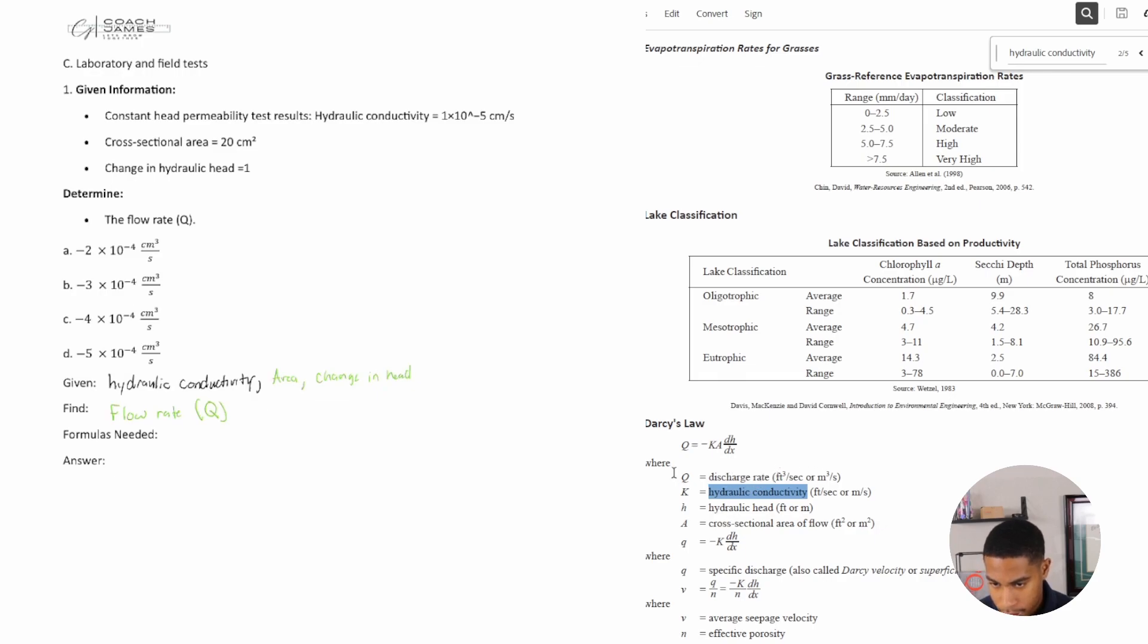And then dH over dX. What's H? Hydraulic head. So it's the change in hydraulic head, which would be 1 in this case. So I have all the things that I need in order to get my answer. All right, so let's write the equation out and then solve.